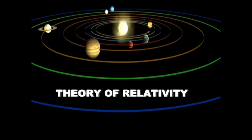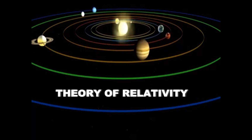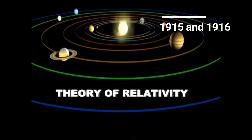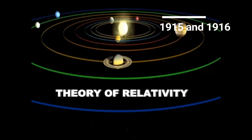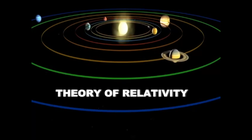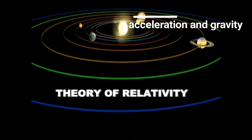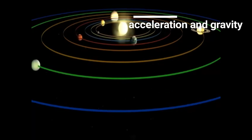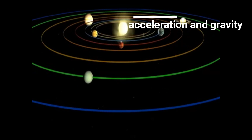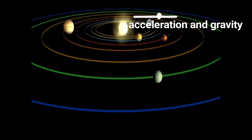General relativity, published between 1915 and 1916, describes acceleration and gravity as distinct aspects of the same reality.